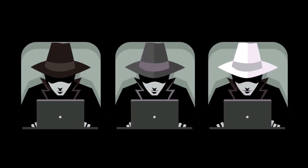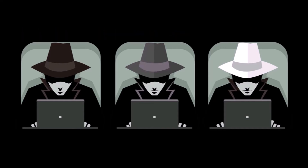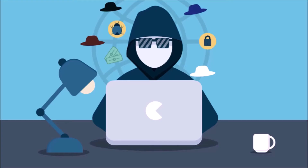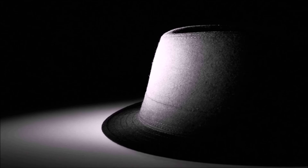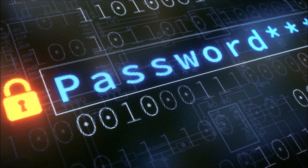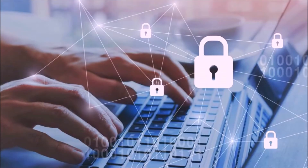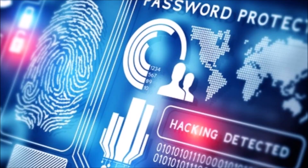Let us dig a little deeper. Hackers can be divided into three categories: black hat hackers, white hat hackers, and gray hat hackers. Each type of hacker hacks for a different reason, a cause, or both, and all have the required skills needed to accomplish their mission. A black hat hacker attempts to gain unauthorized entry into a system or network without any consent for malicious reasons. They try to inflict damage by compromising security systems, altering functions, and shutting down systems, websites, or networks.